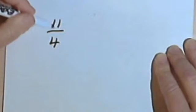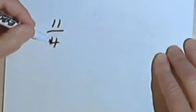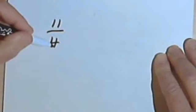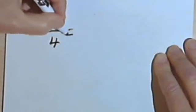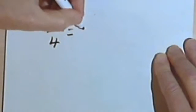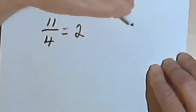I'm going to divide the numerator by the denominator. In other words, I'm dividing 4 into 11. 4 goes into 11 two times. Actually, let's do this over here.